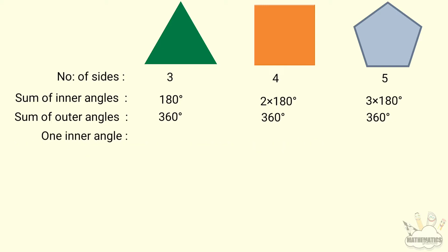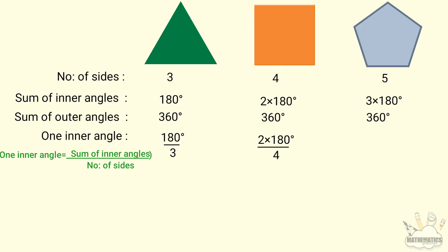For one inner angle of a polygon, the measure equals the sum of inner angles divided by the number of sides. For the equilateral triangle: 180 ÷ 3. For the square: 2 × 180 ÷ 4. For the regular pentagon: 3 × 180 ÷ 5.